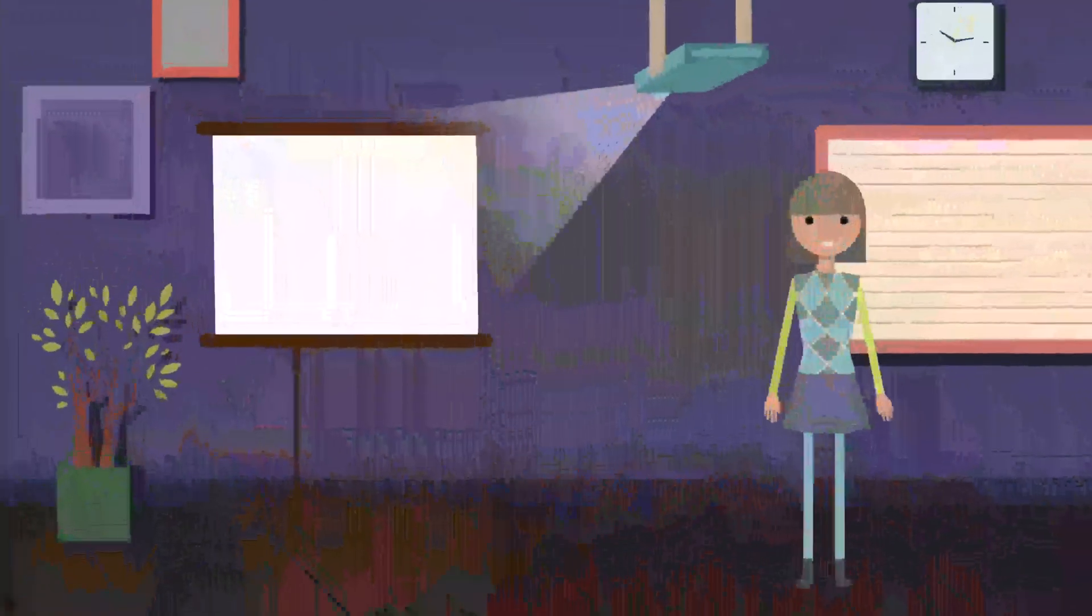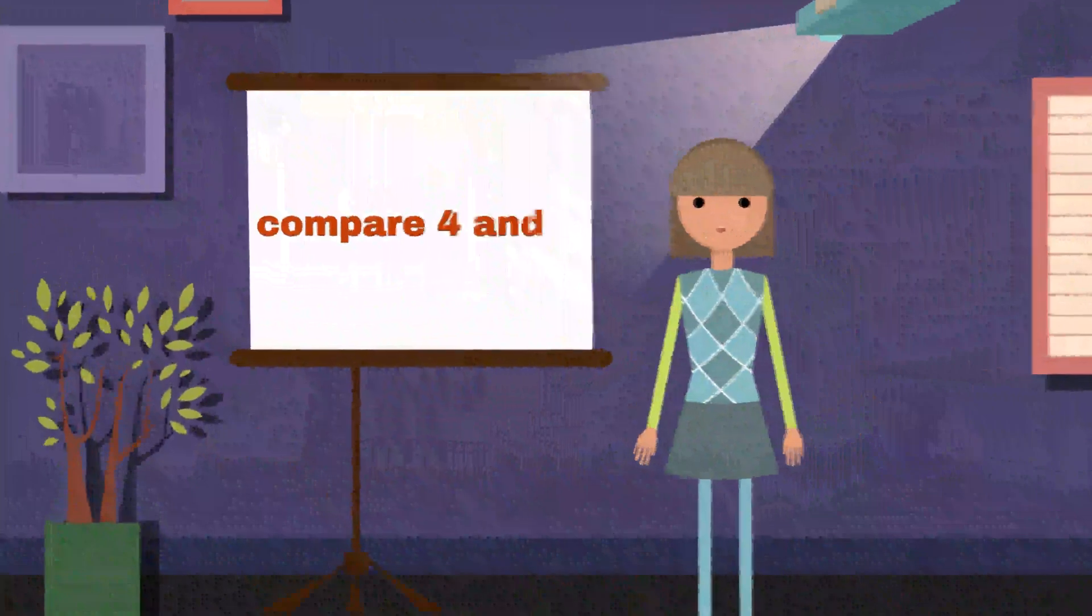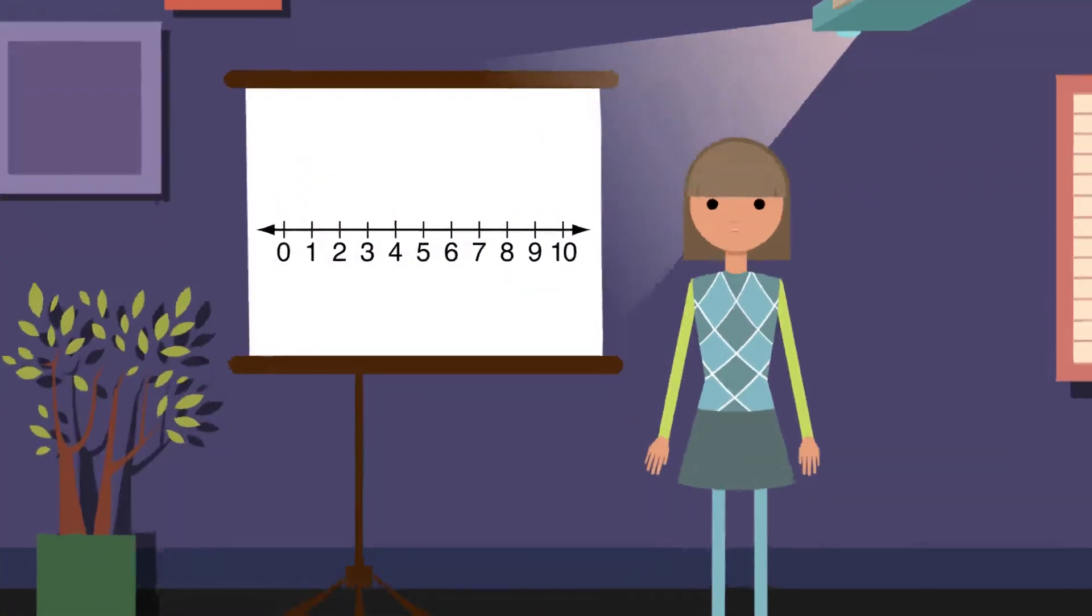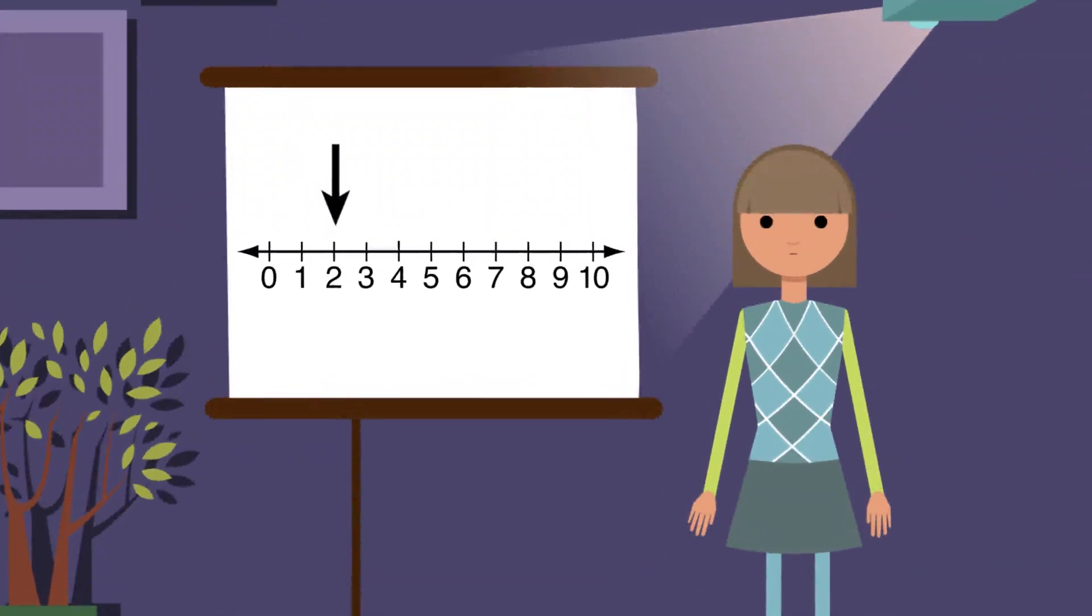We can use number lines to compare numbers. Let's compare the numbers 4 and 8. First, start with 0 and count up to 4 with me. Ready? 1, 2, 3, 4. Perfection!